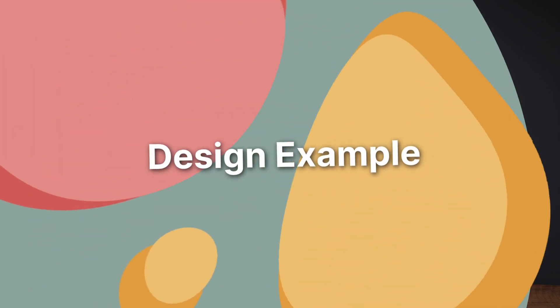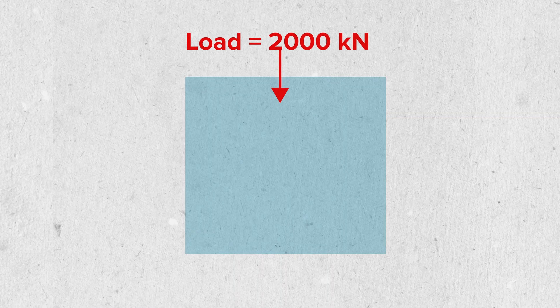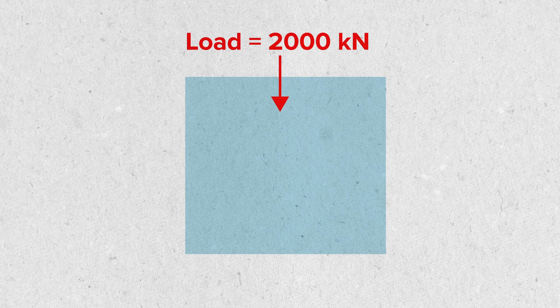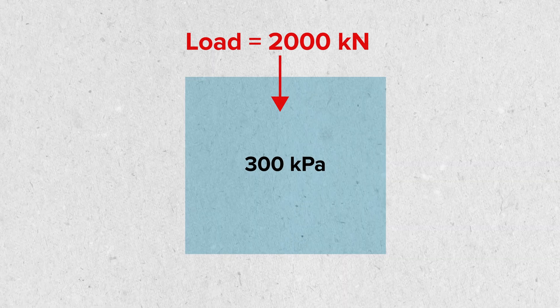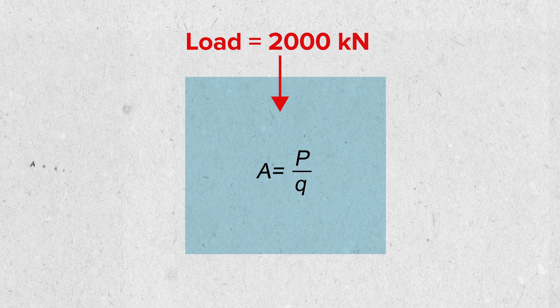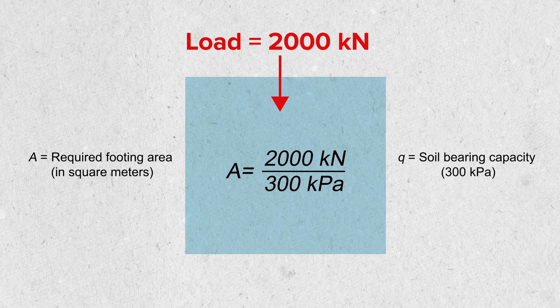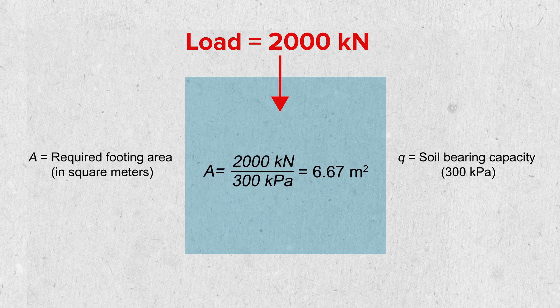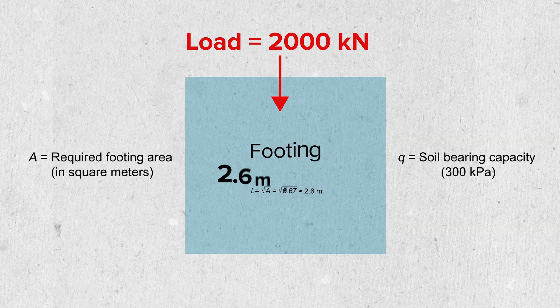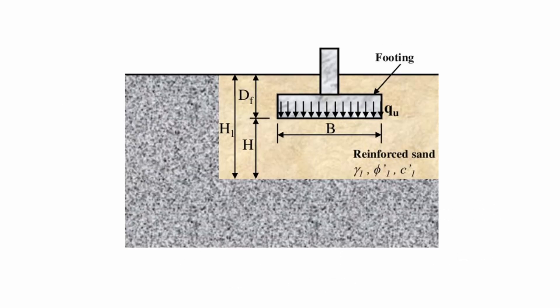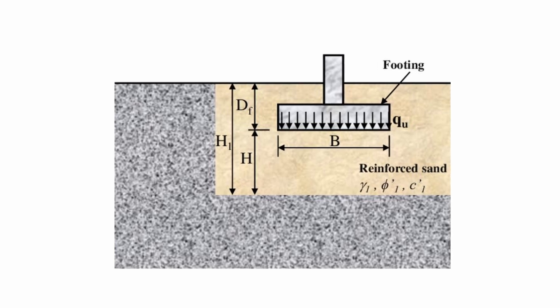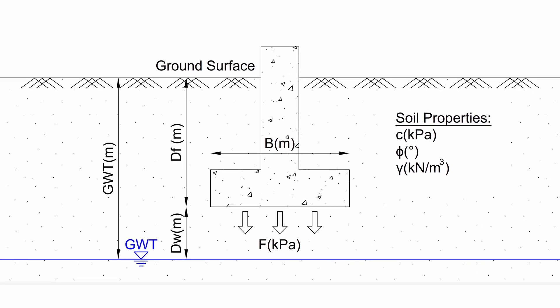Let's run through a quick example of sizing a pad footing. In this case we have 2,000 kilonewtons from the load rundown above, applied onto a really good soil with 300 kPa bearing capacity. First, we get the approximate area of the foundation: 2,000 kN divided by 300 kPa gives us roughly 6.7 square meters, or approximately 2.6 by 2.6 meters square. But that's not where we stop — we also need to account for the self-weight of the foundation itself. The depth of concrete has a weight to it that can reduce the available bearing capacity, which means we may need a slightly bigger foundation.